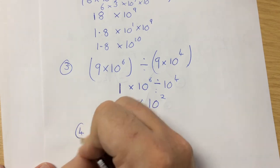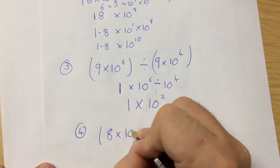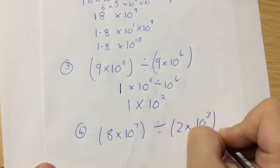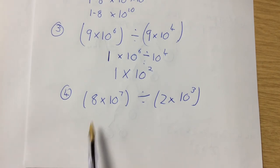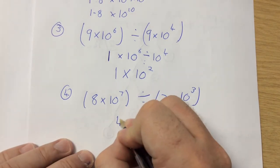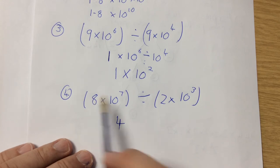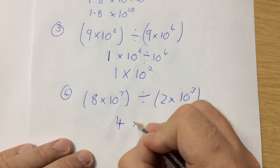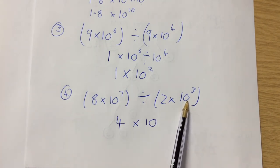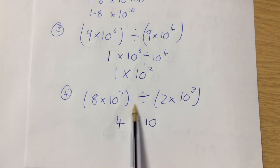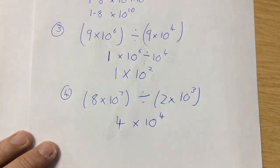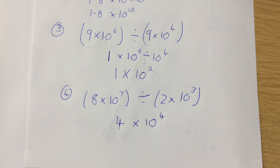Let's do one more. If I've got 8 times 10 to the 7 divided by 2 times 10 to the 3 — 8 divided by 2 is 4. And then 10 to the 7 divided by 10 to the 3: when you're dividing indices, you take them away, so 7 take away 3 is 4. So that one becomes 4 times 10 to the 4.